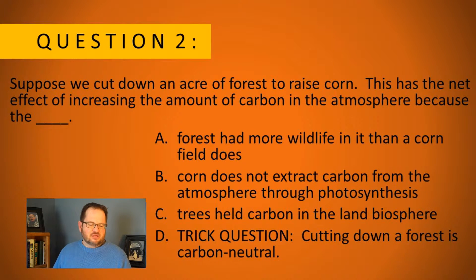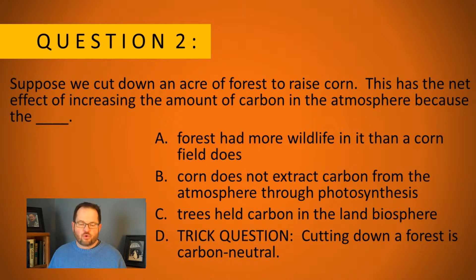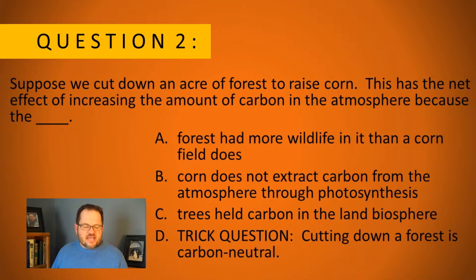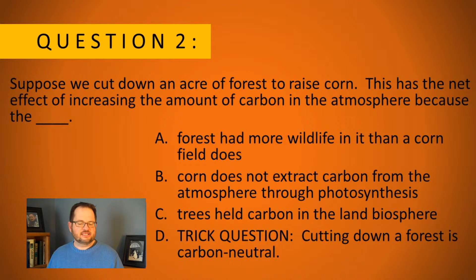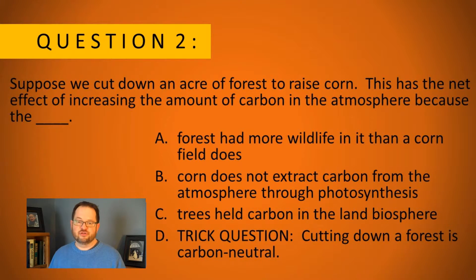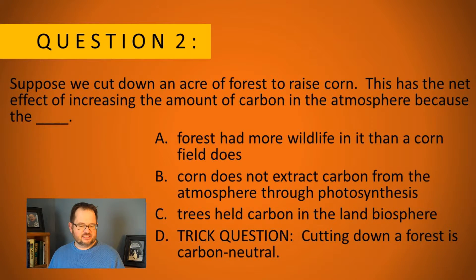Welcome back. Suppose we cut down an acre of forest to raise corn. This has the net effect of increasing the amount of carbon in the atmosphere because: A, the forest had more wildlife in it than the cornfield does; B, the corn does not extract carbon from the atmosphere through photosynthesis.